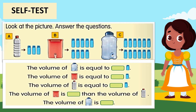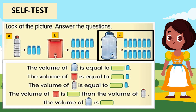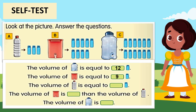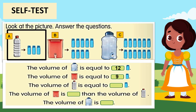Let's do a self-test. The volume of water dispenser C is equal to 12 bottles. The volume of water dispenser B is equal to 9 bottles. The volume of water bottle A is equal to 3 bottles.